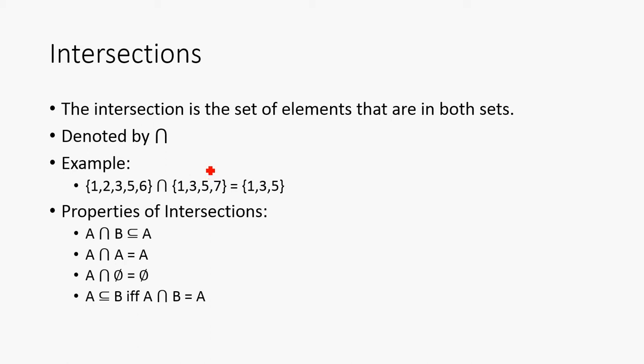So, the next operation we're going to talk about is the intersection. The intersection is the set of elements that are in both sets. So, this is typically denoted by this upside-down U. And note that this is very similar to the AND sign. So, take for example this set right here, {1,2,3,4,5,6}, and this set right here, {1,3,5,7}. You'll note that both of these sets have 1, 3, and 5 in common. So, this would be the intersection.